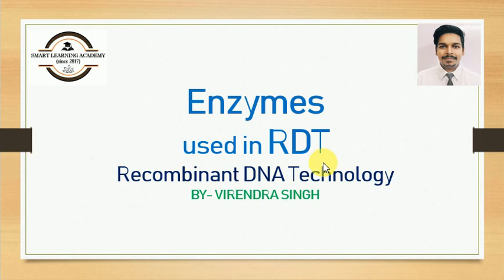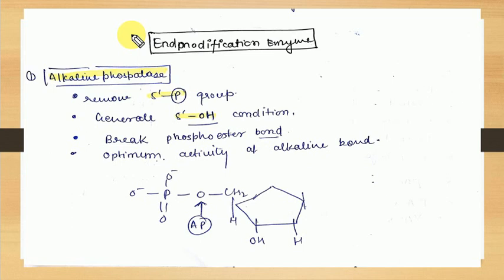Basically three types of end modification enzymes are used in recombinant DNA technology. The first one is alkaline phosphatase. As the name suggests, phosphatase means it removes the phosphate bond. What is the difference between nucleases and alkaline phosphatases? Nucleases break the phosphodiester bond, whereas alkaline phosphatase removes phosphate groups.